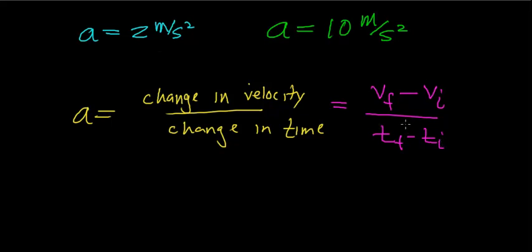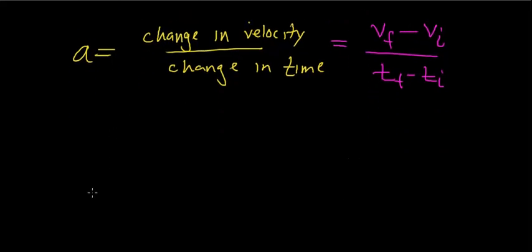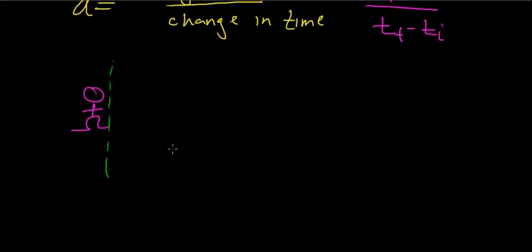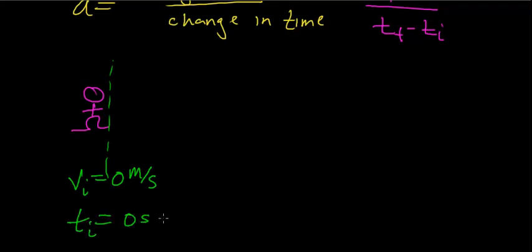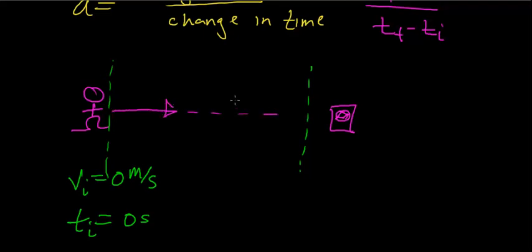Let's make this definition of acceleration more clear with an example. Imagine you have a runner on a starting line, with an initial velocity of zero — they are starting from rest. A stopwatch reads an initial time of zero seconds. Over at the finish line, there's a radar gun like police use to clock the speed of a car. The person hears the starting gun and runs as fast as they can, continuously increasing their velocity.